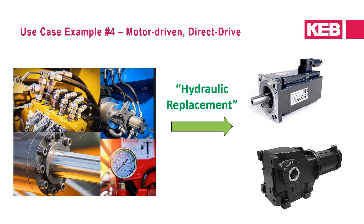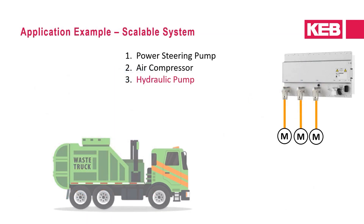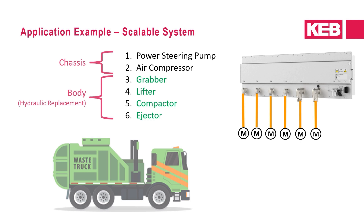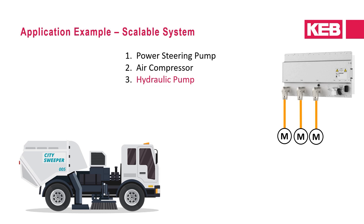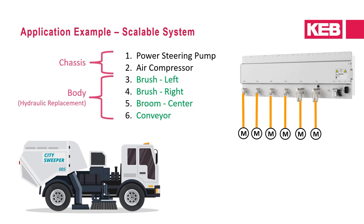The final use case example is motor-driven or direct-drive hydraulic replacement applications — that is, directly operating equipment with electromechanical power transmission components such as motors and gearing, as opposed to fluid hydraulic means. Hydraulics are notoriously inefficient, and hydraulic fluid is a hazardous chemical, so there are obvious reasons to consider more efficient and environmentally safer solutions. In the refuse truck example, the large hydraulic pump can be replaced with electric motors for each of the lifting, compacting, and ejecting operations. A second example is a street sweeper where hydraulic motors controlling the brooms can be replaced with electric direct-drive or geared motors, as well as the conveyor.